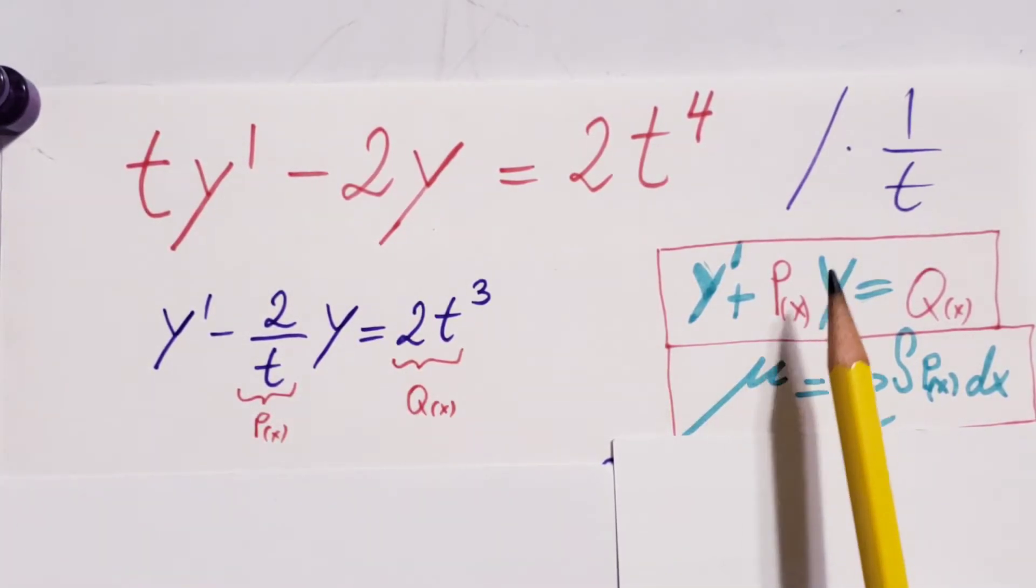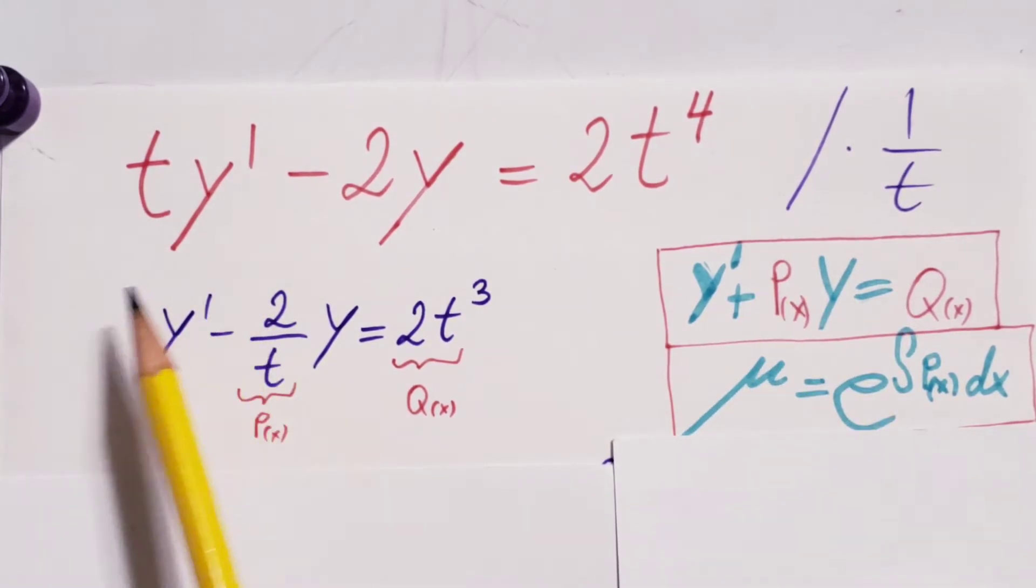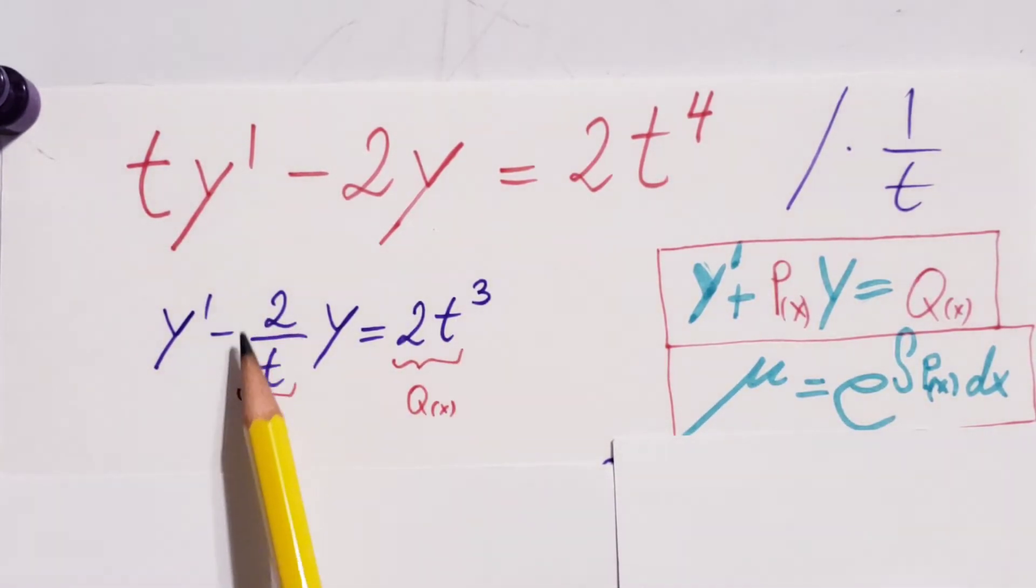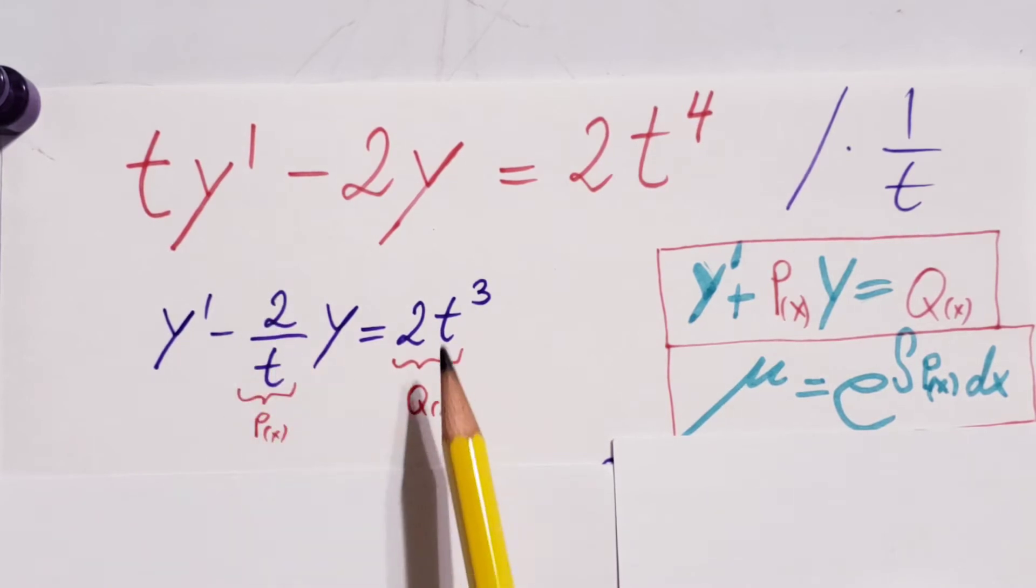Now, if we compare our formula to what we got here, we can see that this will be my p(x) and q(x). Except that we are working with t as a variable, not with x. So maybe more correct would be if we would call it p(t) and q(t). But you guys get the idea. And here, this is p(t).